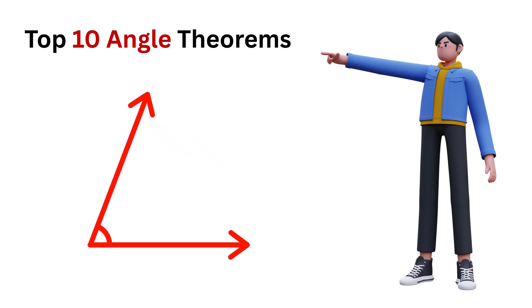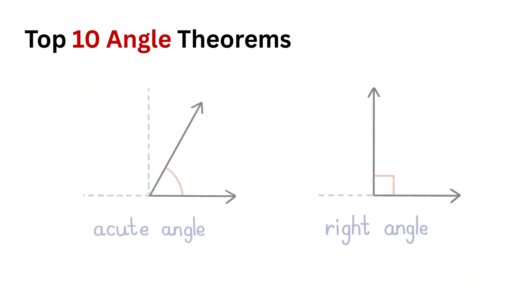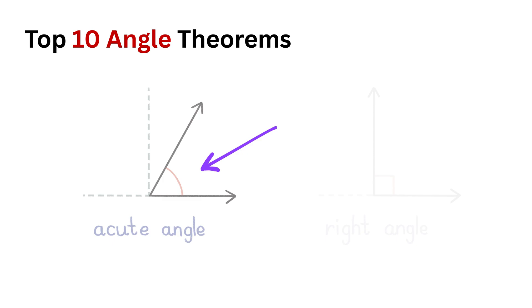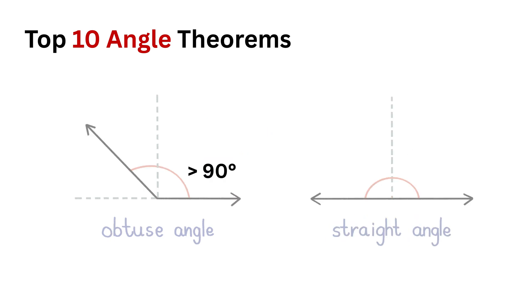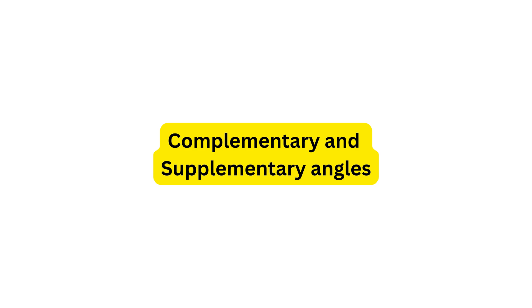Top 10 angle theorems everyone must know. Before we begin, note that these theorems might involve different types of angles: an acute angle is smaller than 90 degrees; a right angle is exactly 90 degrees; an obtuse angle is bigger than 90 degrees; and a straight angle is exactly 180 degrees, looking like a straight line with both sides pointing in opposite directions.